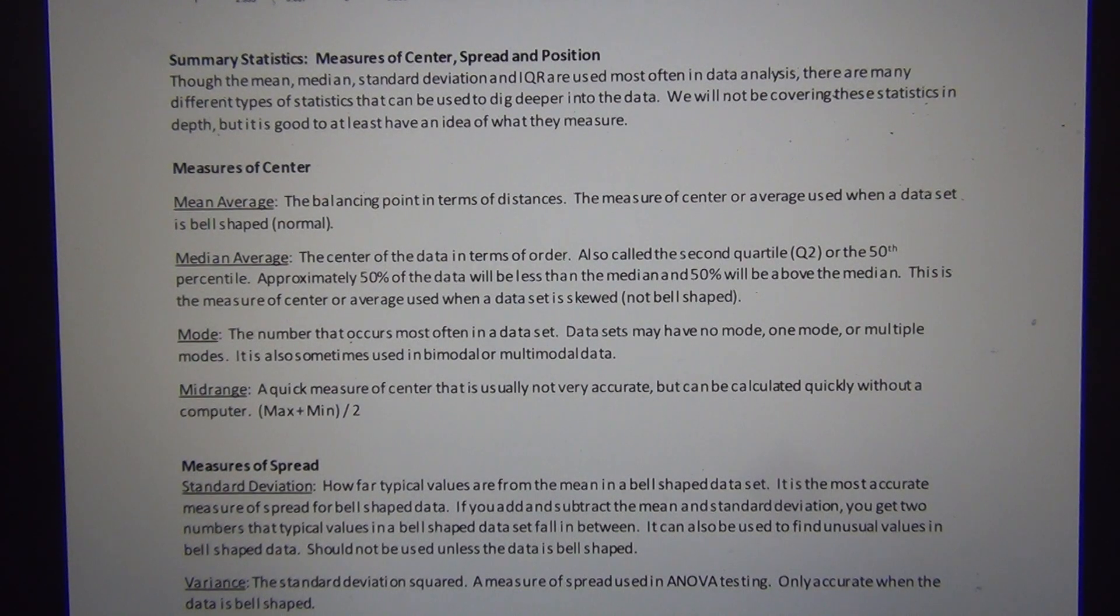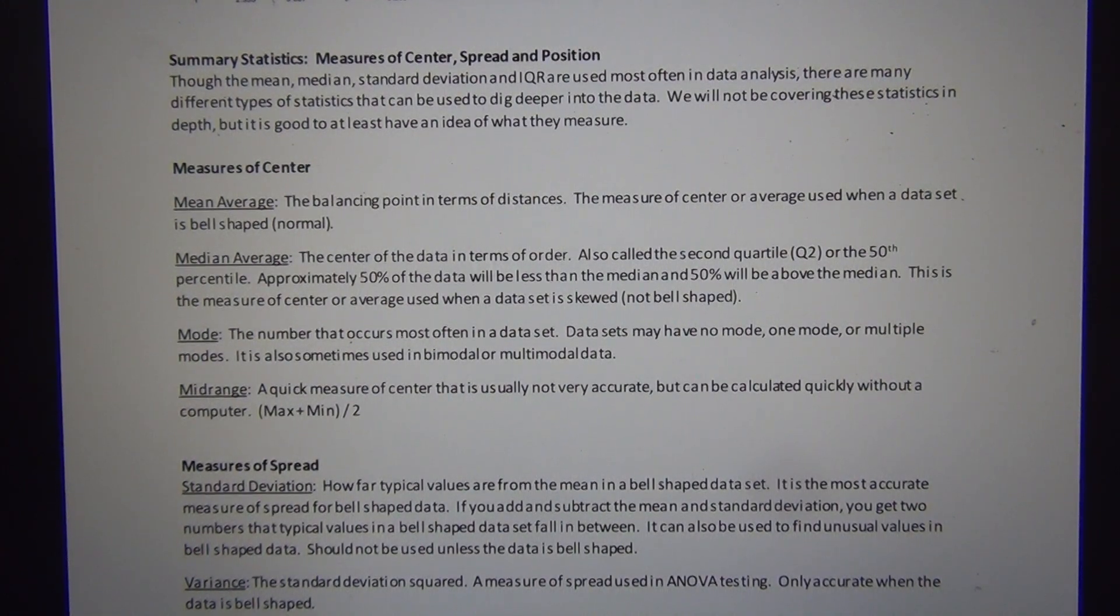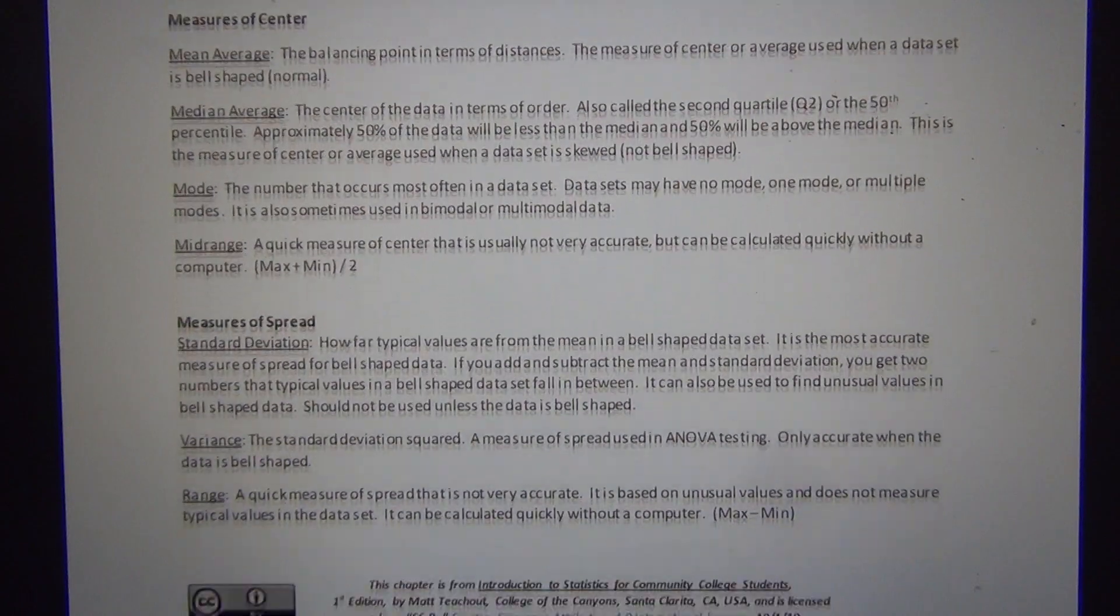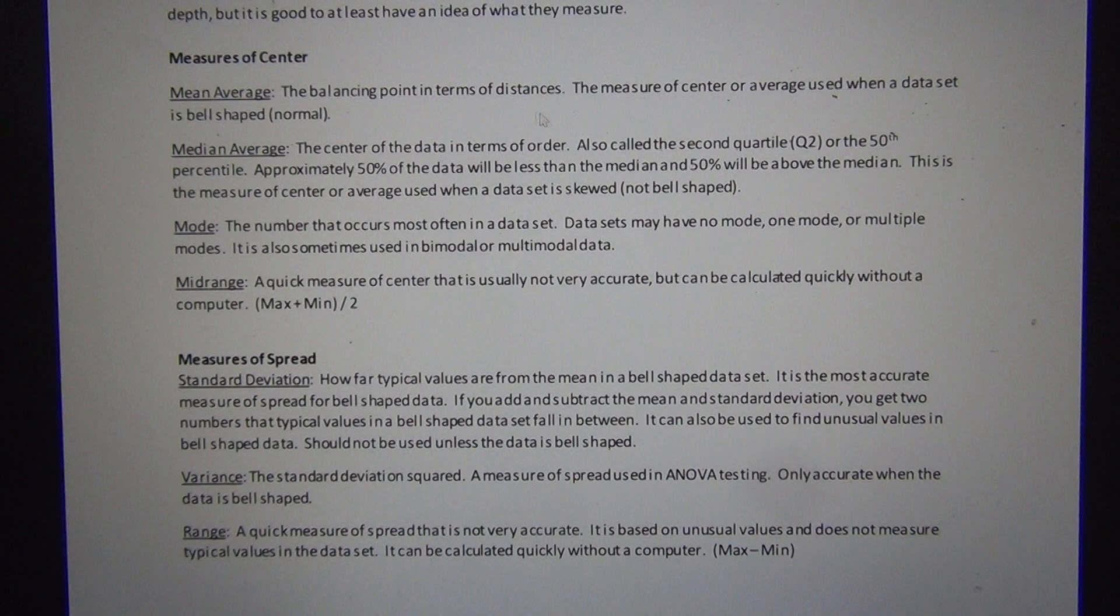We also have measures of spread and then measures of position. So we're going to look at each of those. We're going to start with four measures of center, so four different types of averages you can think of them as.